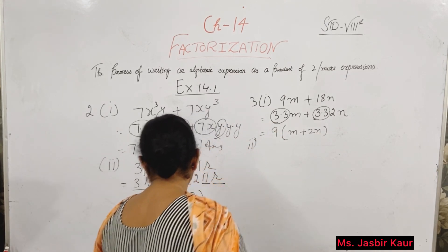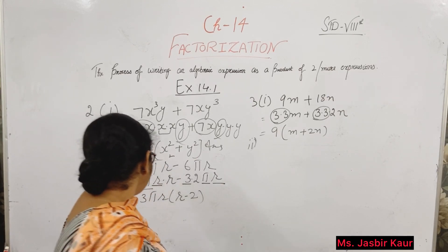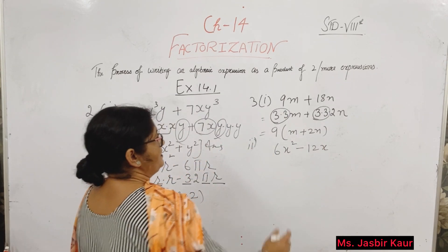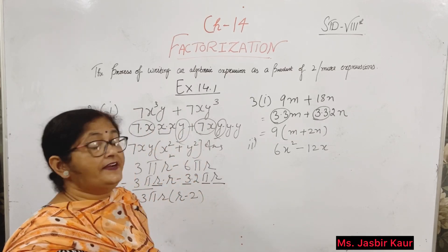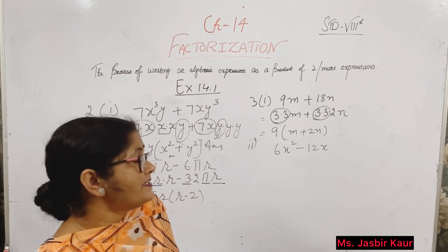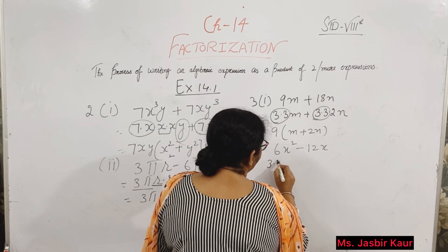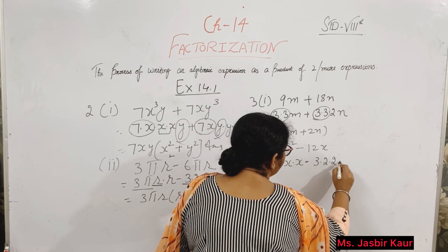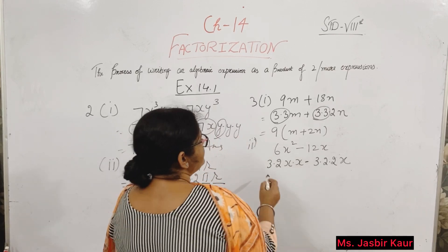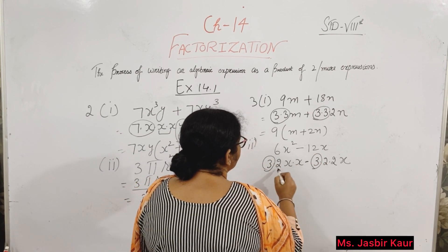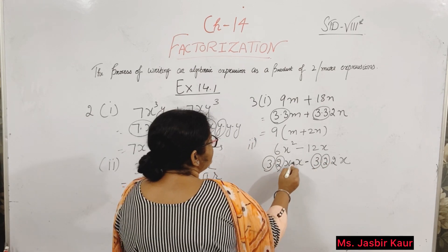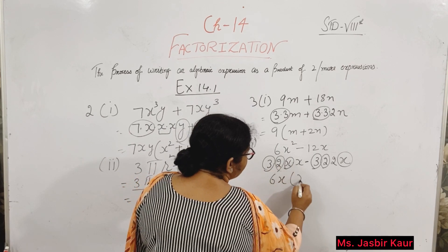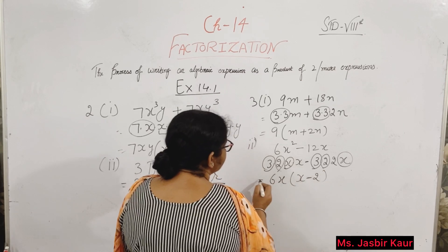Second part of third question: 6x squared minus 12x. Prime factorization of 6: 3 twos are 6, and 6 twos are 12. Common numbers are 3, 2, and x — meaning 6x is common. Left numbers give x minus 2. Answer is 6x into (x minus 2).